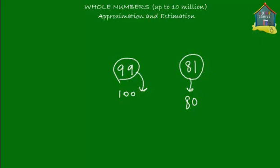The first case is called rounding up, and the second case is called rounding down where the number becomes smaller. The point is that you didn't say exactly how much you bought the shoes for — you just rounded off and said approximately how much. So we write: 99 is approximately equal to 100, or 81 is approximately equal to 80. When you say approximately, you use the symbol of double waves.